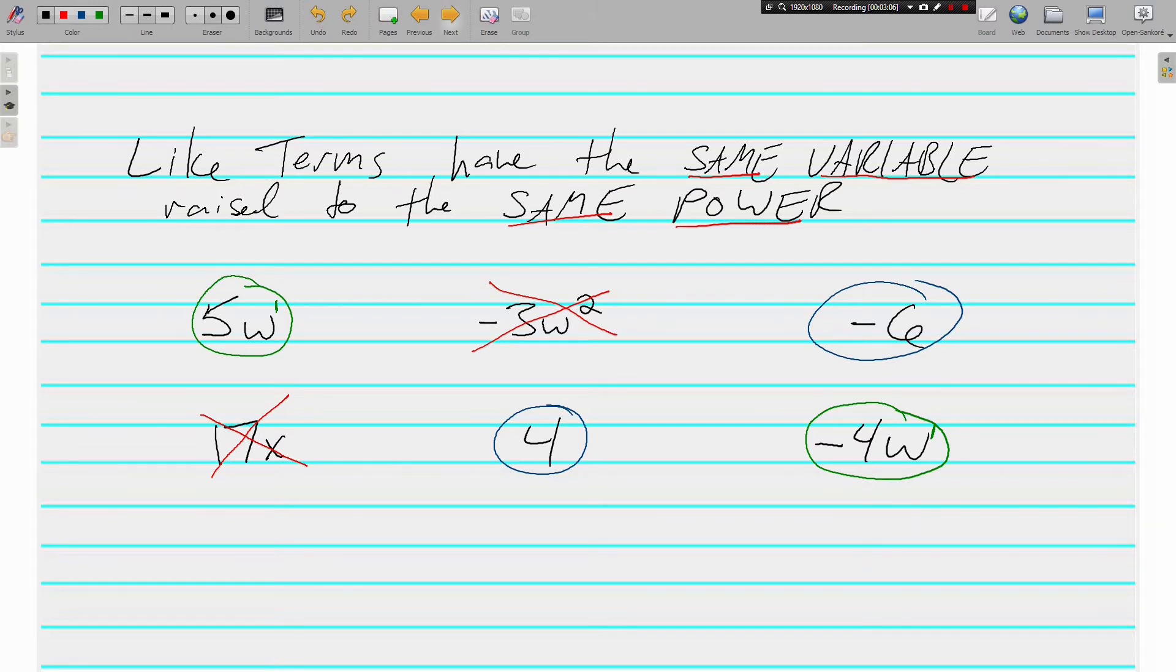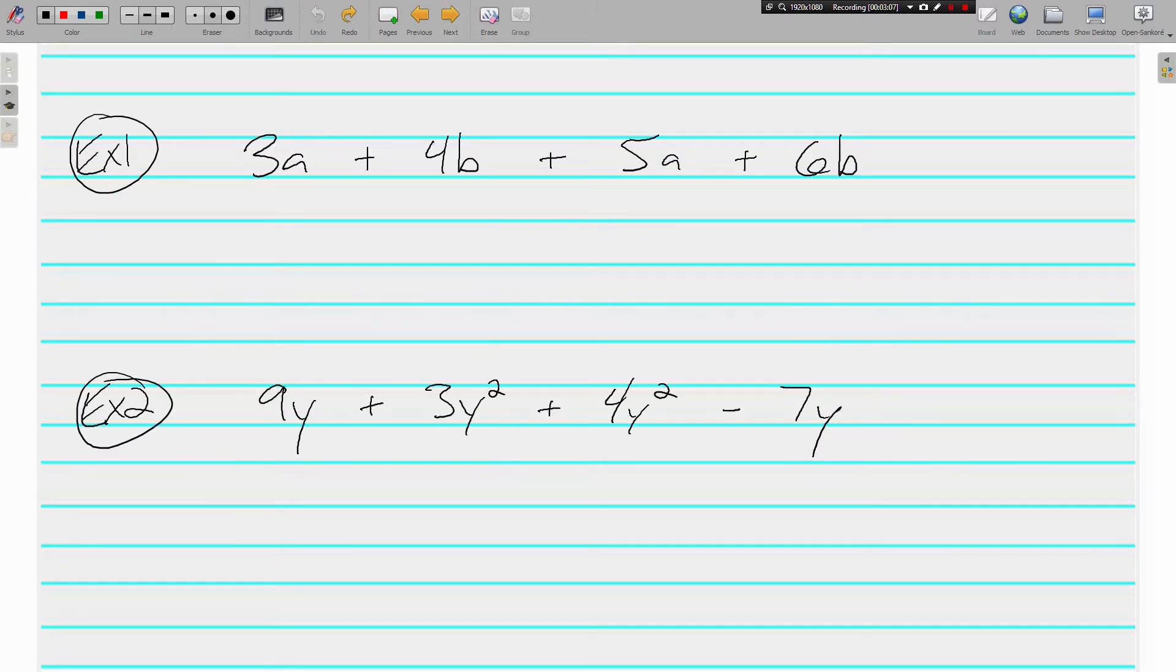Let's look at some expressions, and we are going to simplify these expressions by combining the like terms. Pause it if you need to, to write these down before we get going. In example one, we have 3a plus 4b plus 5a plus 6b. What's alike here in this first problem? Well, the 3a and the 5a. And that 5a is positive. We're looking at the sign on the left. 3a is also positive. There's no sign on the left because it's the first term, so we know it's positive.